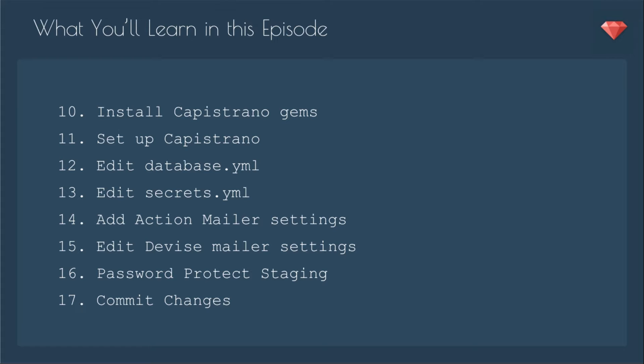We're going to install Capistrano gems, set up Capistrano, edit database YML, add secrets YML, add action mailer settings, edit the devise mailer settings, and password protect staging. We're going to commit all these changes so that it's ready for deployment.